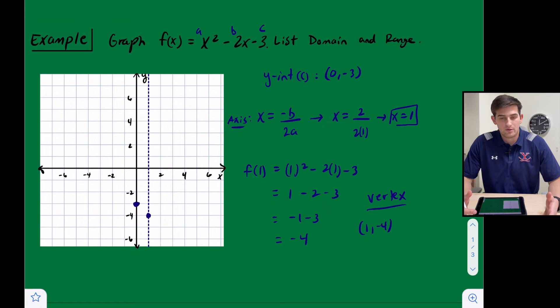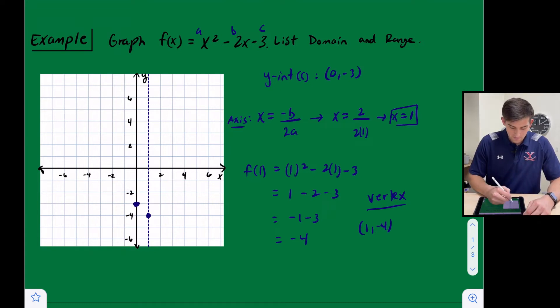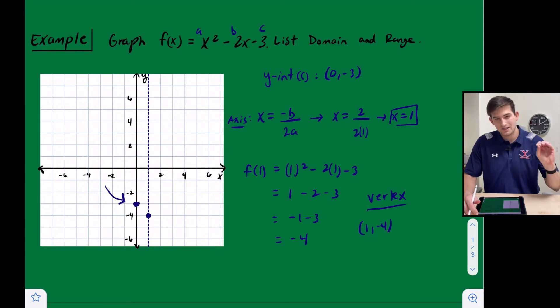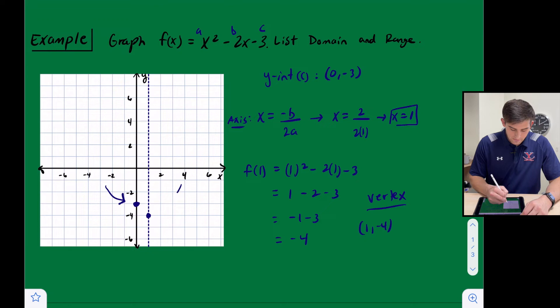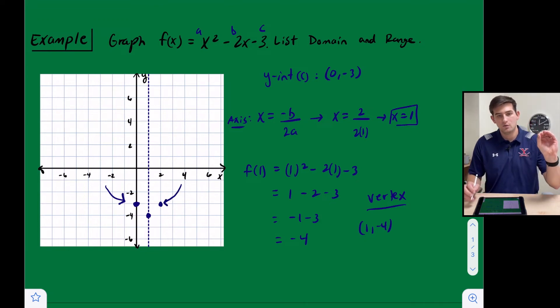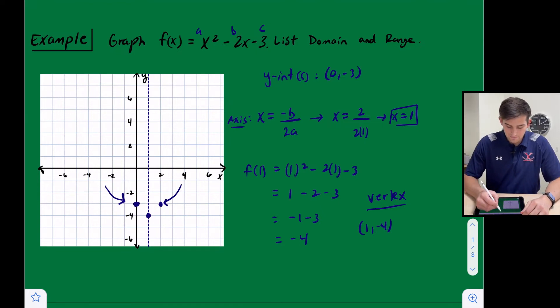Okay, now if you remember the axis of symmetry, it is symmetrical. Our parabola is symmetrical about the axis of symmetry. So if I have this y-intercept point right there, it is one unit to the left of my axis of symmetry. So I know that I also have another point right here, because if I reflect the y-intercept over the axis of symmetry, then that is where that point would be.